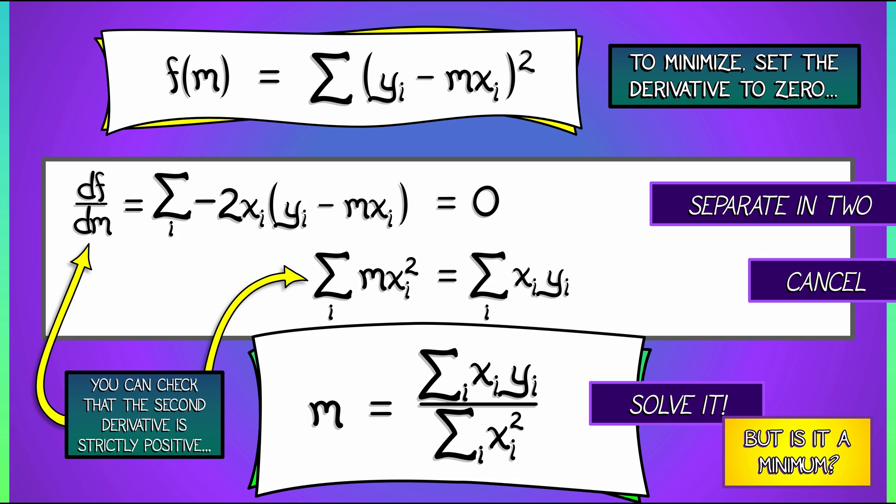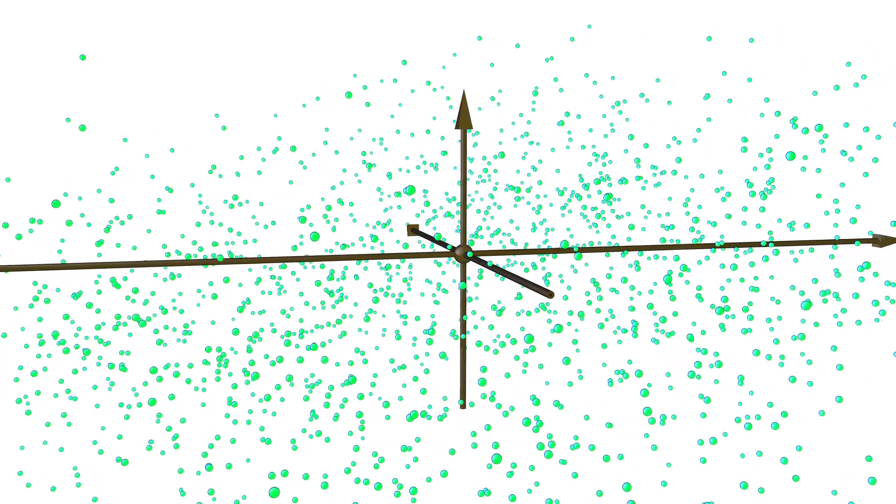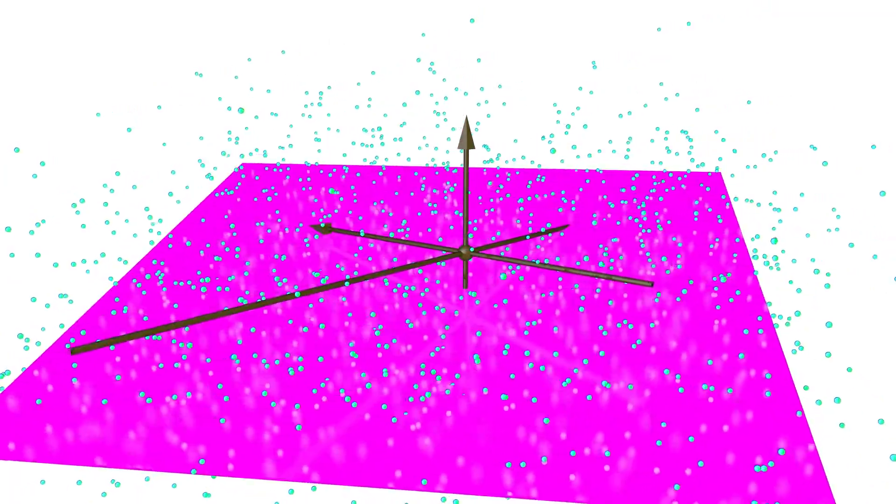But we're not really done. Because as an example of an application to data science, this was really pretty trivial. What if you have a more complex scenario? What if you have many, many variables, and you're trying to figure out correlations, regressions? Oh, wow, there is so much that you can do with this.